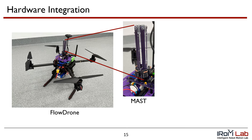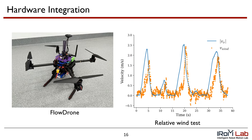We integrate the MAST onto a quadrotor UAV to create FlowDrone, a platform capable of fast and accurate omnidirectional anemometry. As proof of concept, we flew FlowDrone around the lab in still air and related the wind estimate of the relative wind to the ground truth velocity from onboard optical flow sensing. The results are shown in the plot on the right.